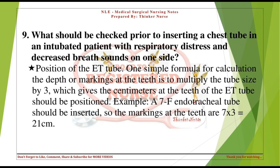What should be checked prior to inserting a chest tube in an intubated patient with respiratory distress and decreased breath sounds on one side? Position of the ET tube. One simple formula for calculating depth at the teeth is to multiply the tube size by 3, giving the centimeters at the teeth. For example, a 7F endotracheal tube should be positioned so the markings at the teeth are 7 × 3 = 21 centimeters.